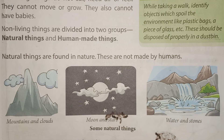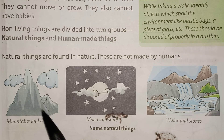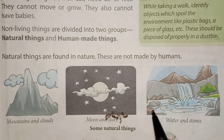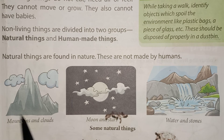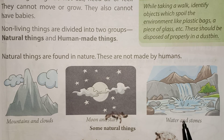In your neighborhood there are many non-living things which are naturally found in nature — we don't make them. Such non-living things are known as natural things. You must have seen clouds, mountains, moon, stars, water, and stones. All these things are non-living but they are natural — man has not made them. We can simply say they are created by God.